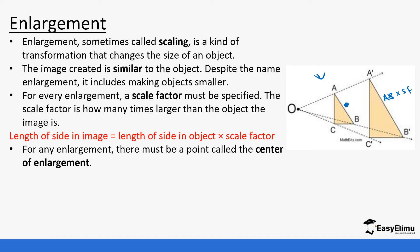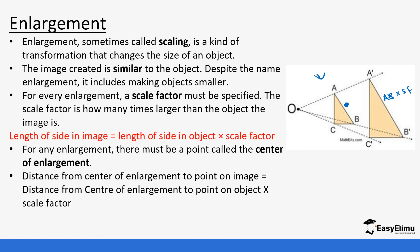For any enlargement, there must also be a point called the center of enlargement. This is the point where the enlargement occurs from. The distance from the center of enlargement O to a point on the image equals the distance from O to the corresponding point on the object times the scale factor. So OA' equals OA times the scale factor.